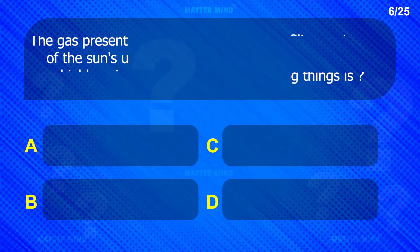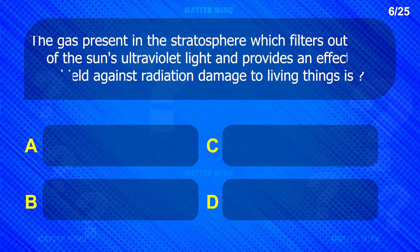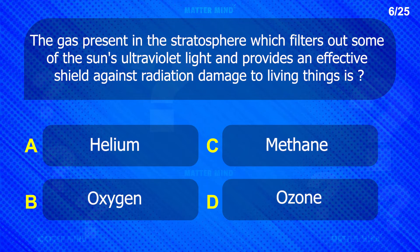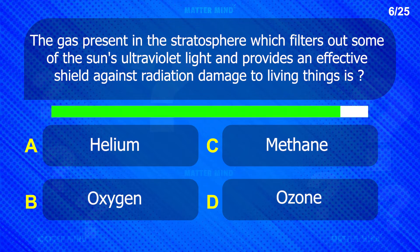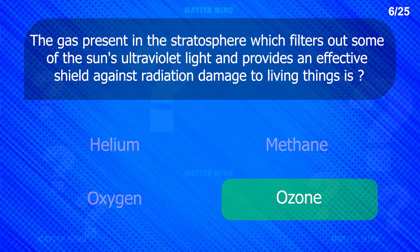The gas present in the stratosphere which filters out some of the sun's ultraviolet light and provides an effective shield against radiation damage to living things is ozone.